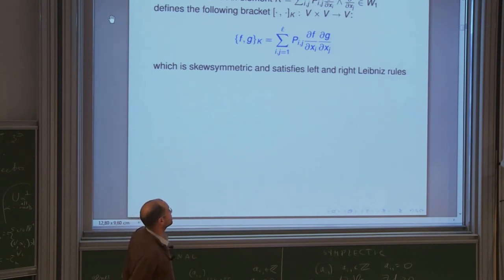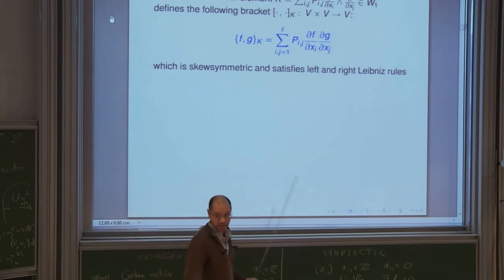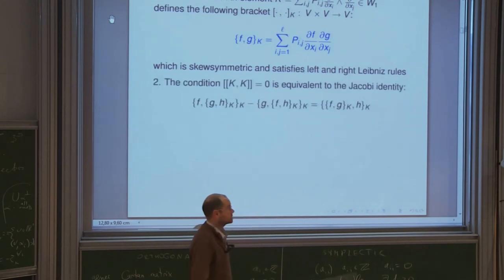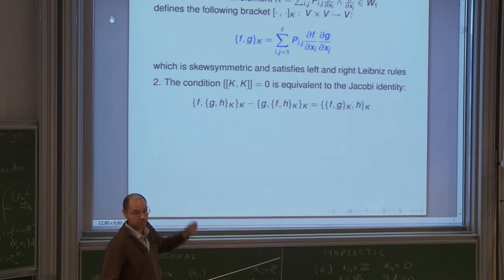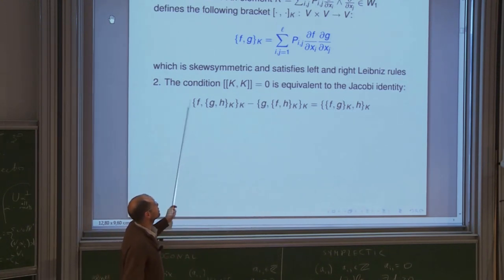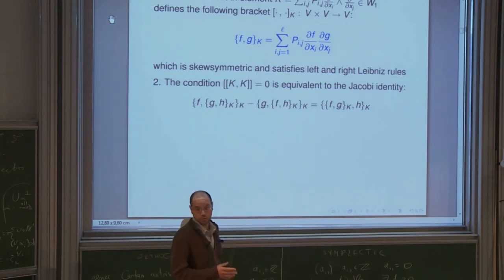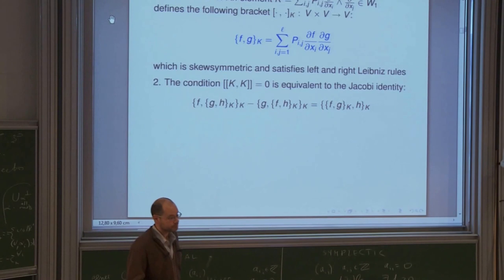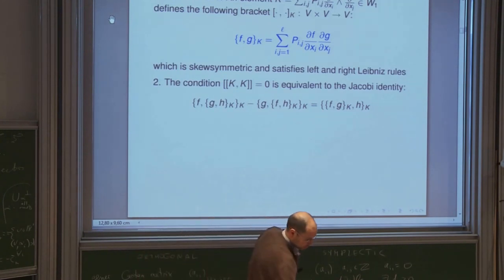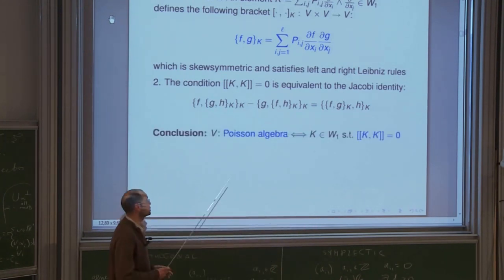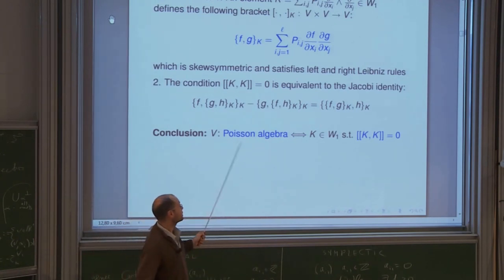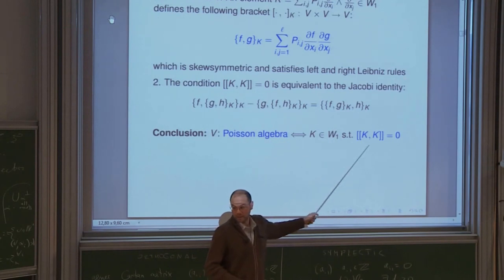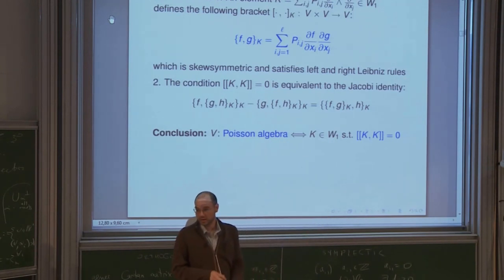The second observation is that the condition for an element of W^1 to have Schouten bracket with itself equal to zero is equivalent to the Jacobi identity for this skew-symmetric bracket. Based on these observations, Poisson algebra structures on V — namely Lie algebra brackets on V satisfying the Leibniz rules — are in bijective correspondence with elements of W^1 such that the Schouten bracket with itself is zero.